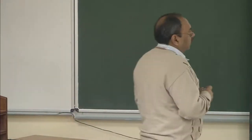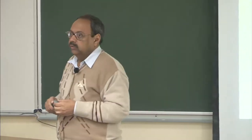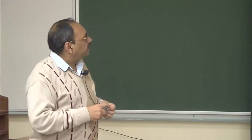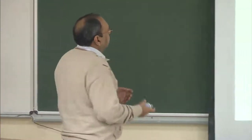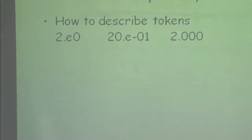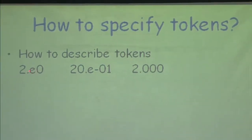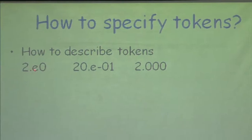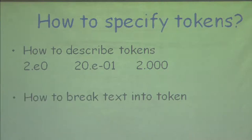Let us now get into the implementation of how we want to tokenize and how we describe tokens. Here is a set of numbers — I have a floating point number, another number, and yet another number — and we want to break this text into a sequence of tokens. This is the first problem we are going to face.